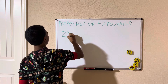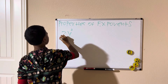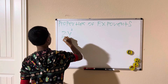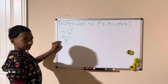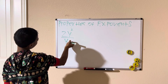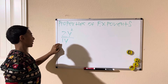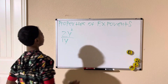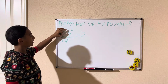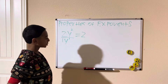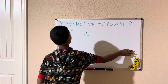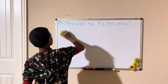Let's try another: 2y squared divided by y. The y in the denominator is y to the first. So y squared divided by y to the first: the exponent is 2 minus 1, which is 1. The result is simply 2y.